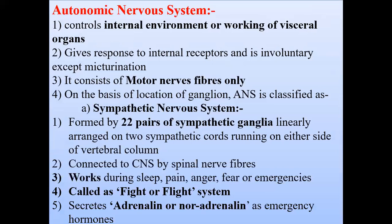The third type of nervous system is called the autonomic nervous system. This is the third section: number one central nervous system, number two peripheral nervous system, and number three the autonomic nervous system. The autonomic system is independent — it communicates with the CNS but acts independently. It controls the internal environment and the working of the visceral organs.